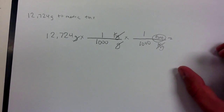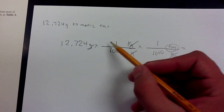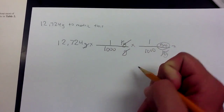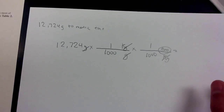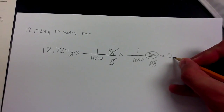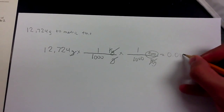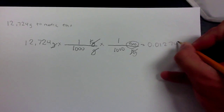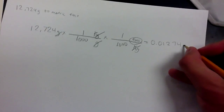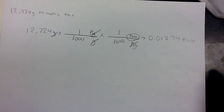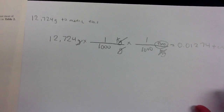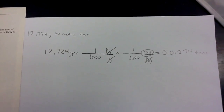Now do the math: take 12,724 times 1 times 1, divide by 1,000 and divide by 1,000. Once you do all of that math, you get your answer of 0.01274 metric tons. Alright, good luck. Use the video as many times as you'd like to study. Good luck for Monday.